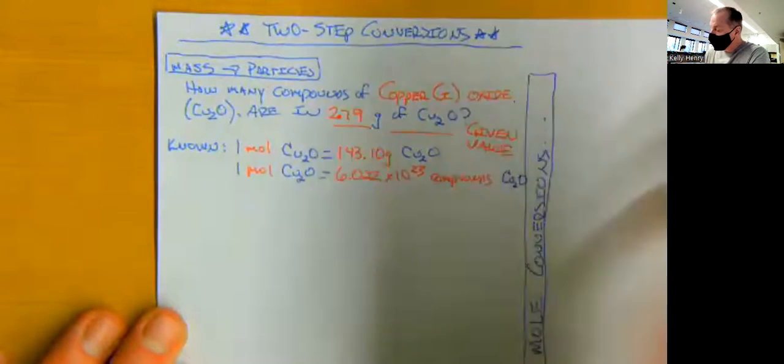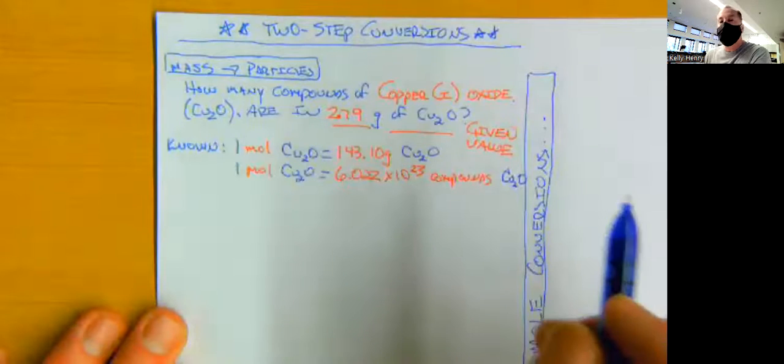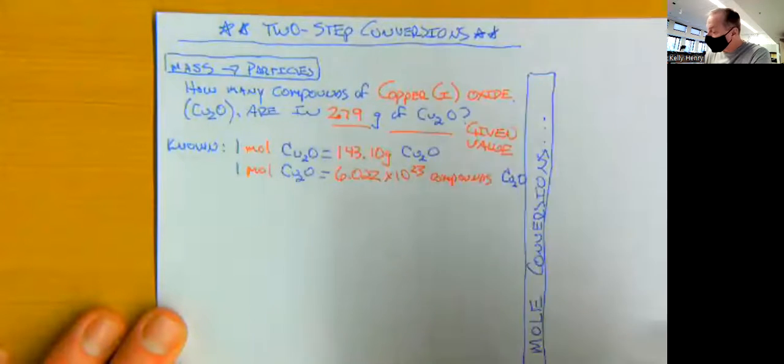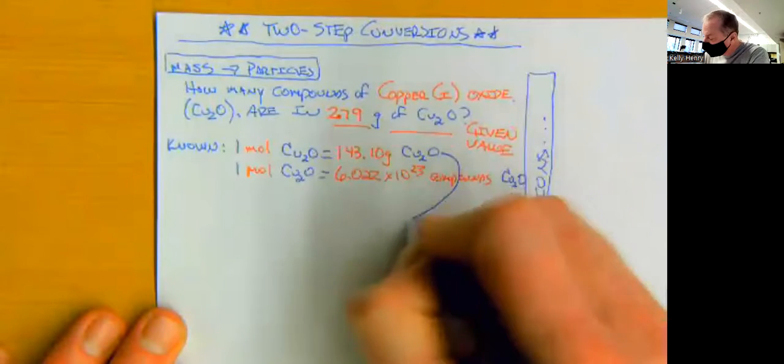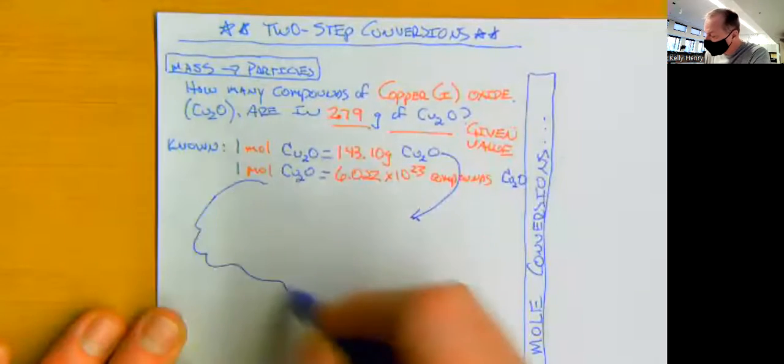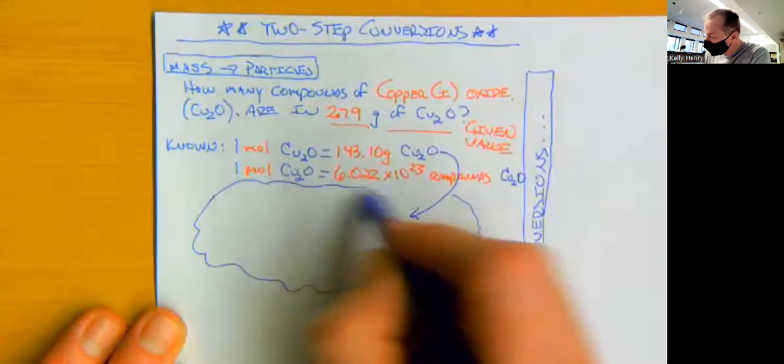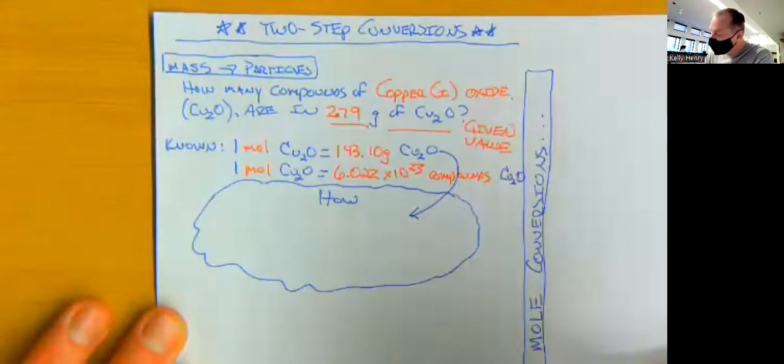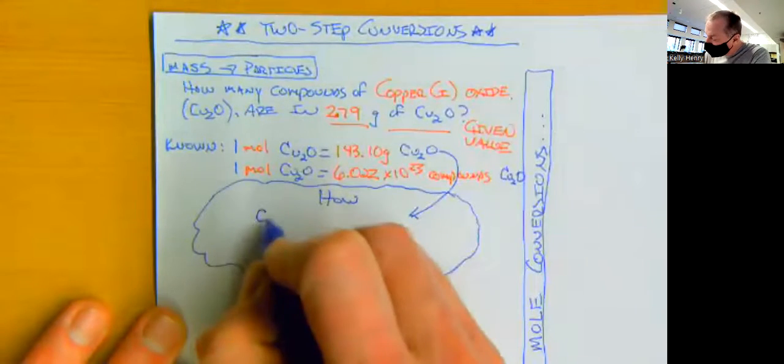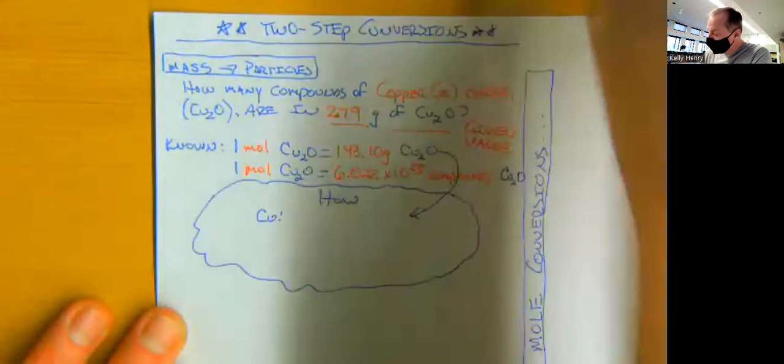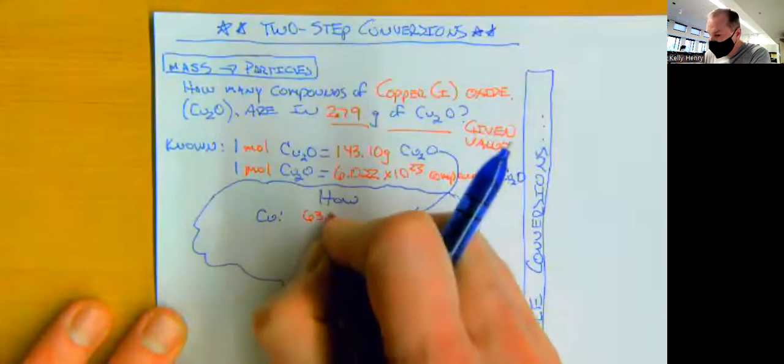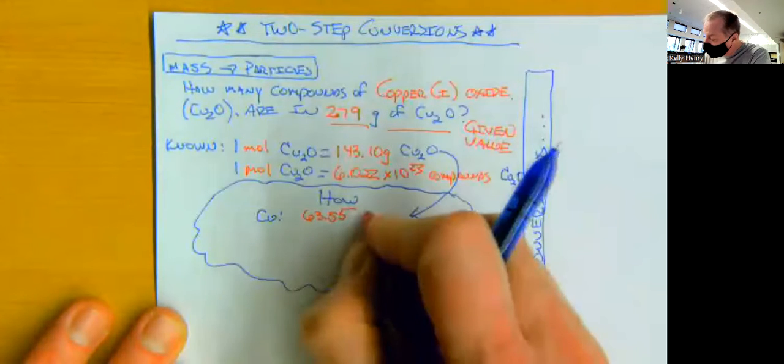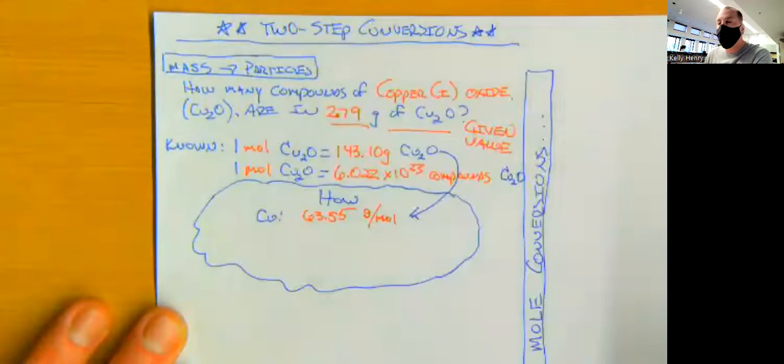So up here, where we said one mole of copper one oxide is equal to 143.10 grams of copper one oxide. How did we get that? How did we do that? So let's take a look at that. Well, we did that. We calculated that number because this is our molar mass. So we have to look at copper one oxide. So we have copper, and the molar mass of that is 63.55 grams per mole. Don't forget our units, grams per mole, 63.55 grams of copper per one mole of copper.